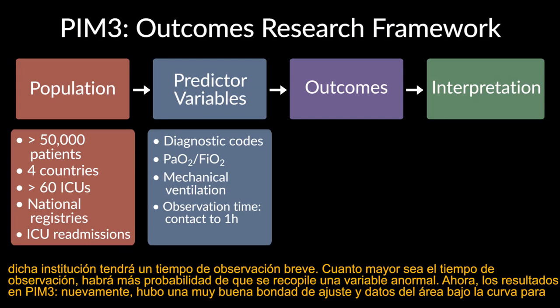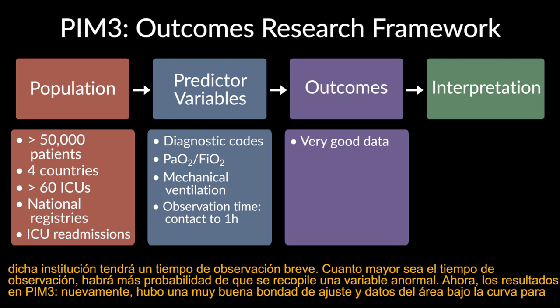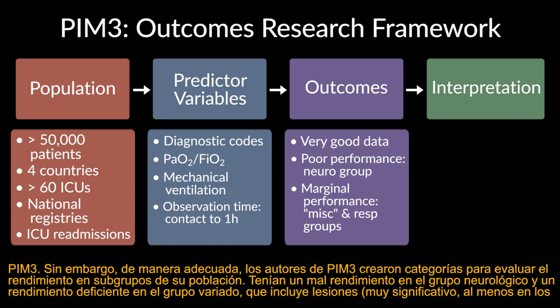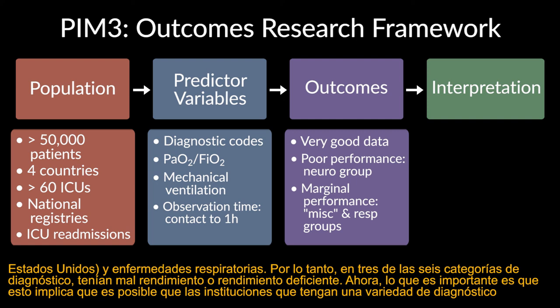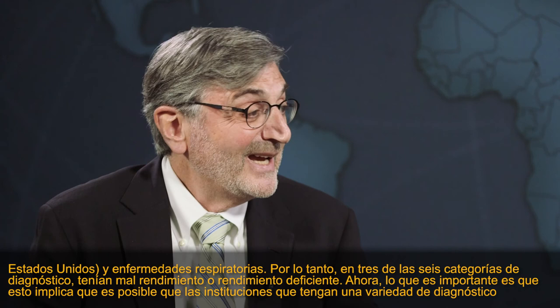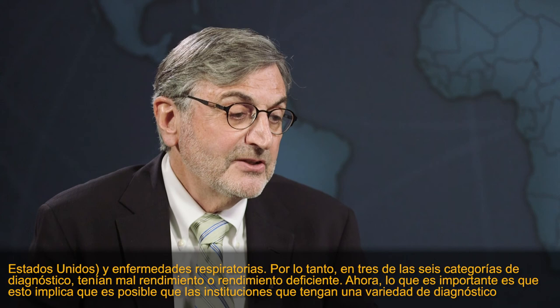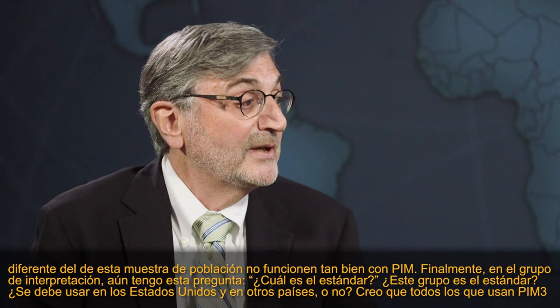The longer the observation time, the more chance an abnormal variable is collected. The outcomes in PIM-3 showed very good goodness-of-fit and area under the curve data. However, the authors appropriately created diagnostic categories to assess performance in subgroups. They had poor performance in the neurologic group and marginal performance in the miscellaneous group — which includes injuries and respiratory illnesses. So in three of the six diagnostic categories, they had marginal or poor performance, implying that institutions with a different diagnostic mix may not work as well with PIM.